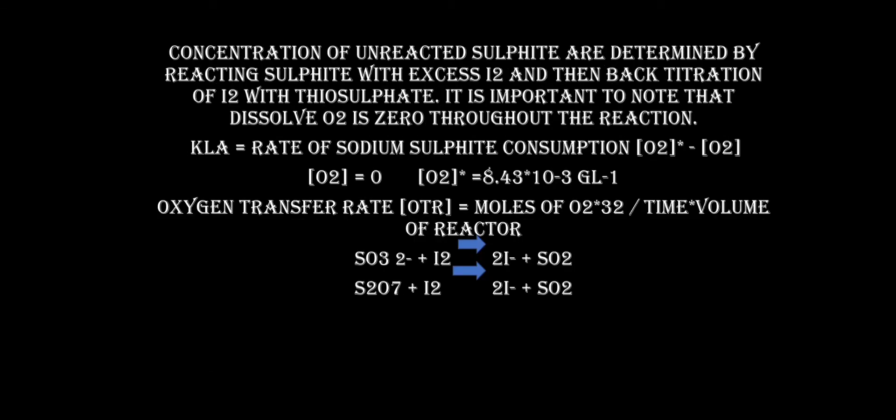Concentrations of unreacted sulphite are determined by reacting sulphite with excess iodine and then back titration of iodine with thiosulphate. It is most important to note that dissolved oxygen is zero throughout the reaction. KLa equals the rate of sodium sulphite consumption divided by (C*O₂ - CO₂), where the concentration of O₂ is zero and C*O₂ is 8.43 × 10⁻³ g/L.